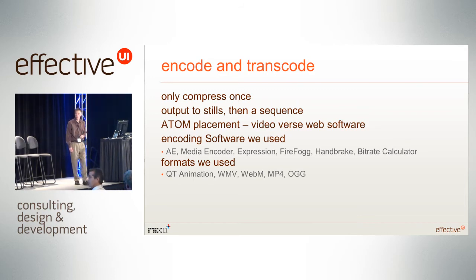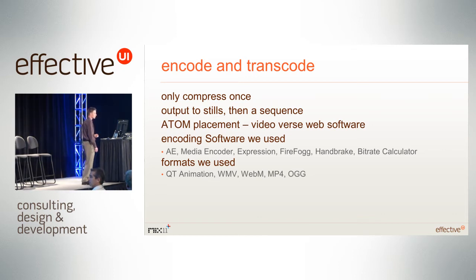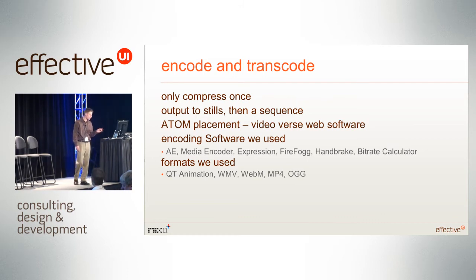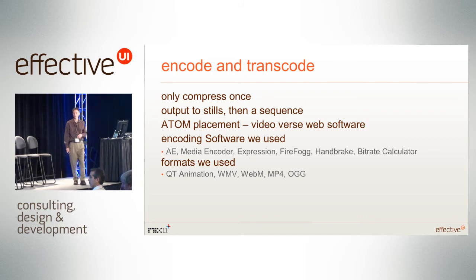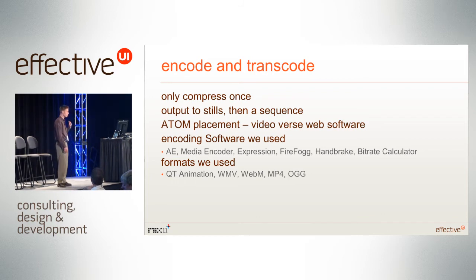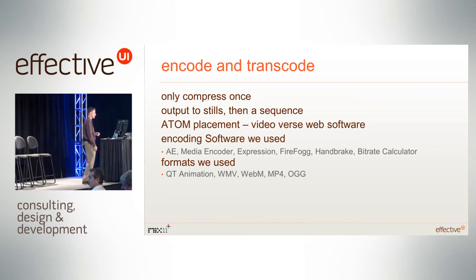The encoding software we used included Adobe After Effects, Adobe Media Encoder, Microsoft Expression Encoder, Firefog, Handbrake, and a Bitrate Calculator. After Effects and Media Encoder were for transferring and prepping files; Expression Encoder was for encoding for IIS; Firefog and Handbrake were for the HTML5 encodes. The formats we used were QuickTime Animation — great because of its quality and alpha channel support, allowing us to maintain an alpha channel while working with the jets — WMV for IIS encoding, and WebM, MP4, and OGG for HTML5.